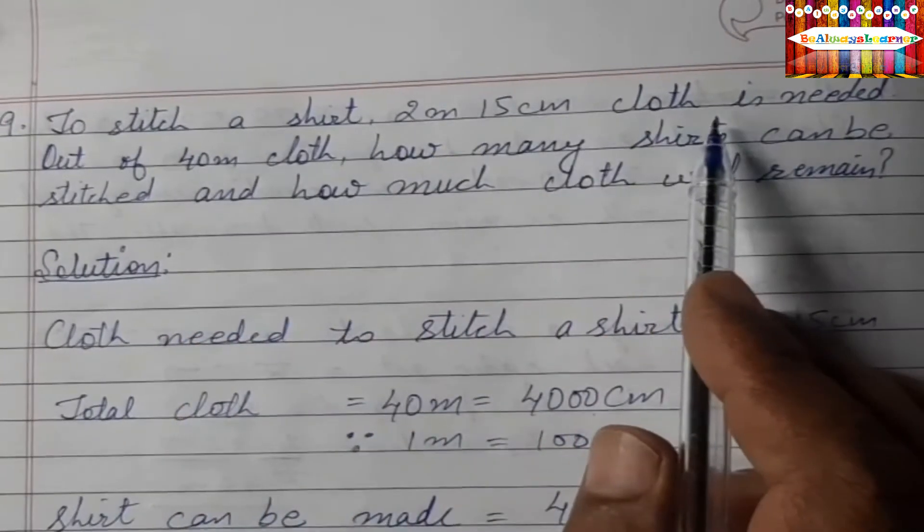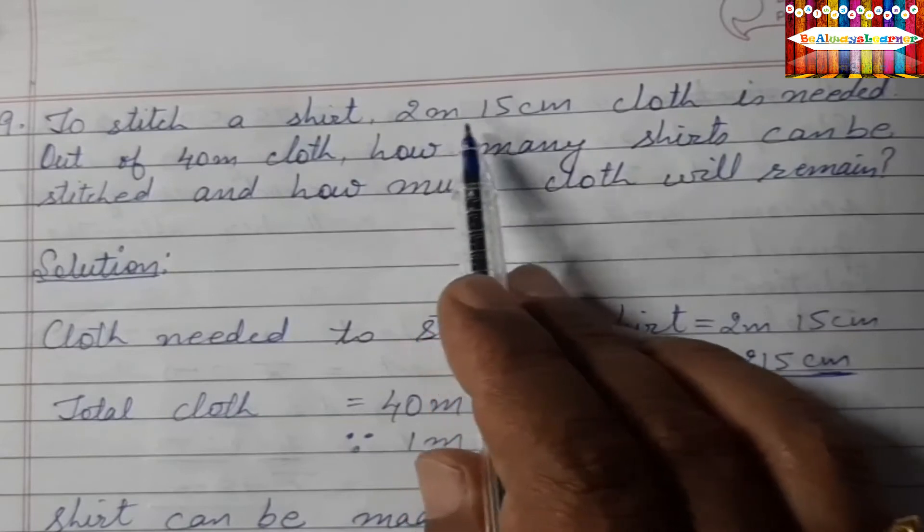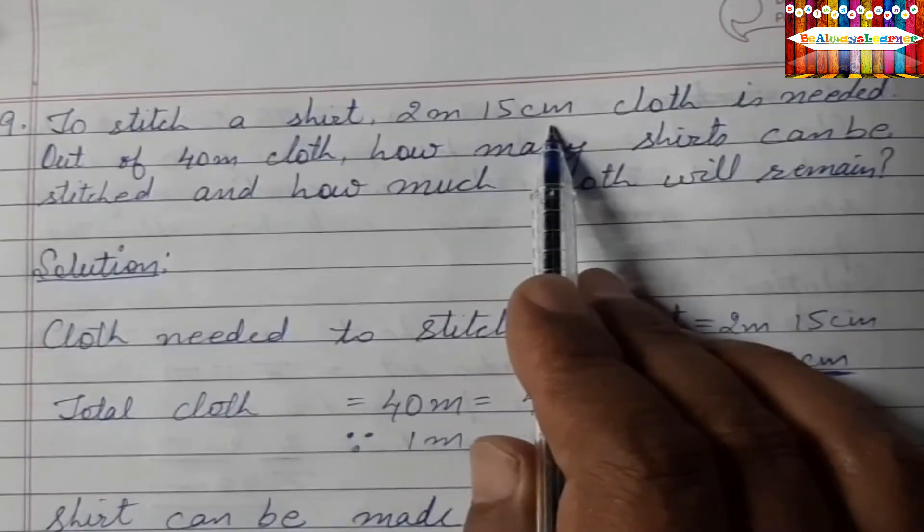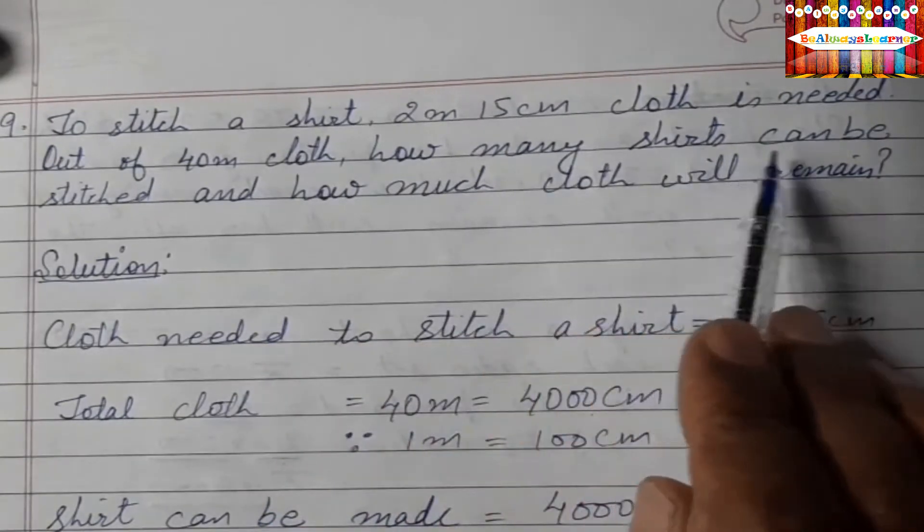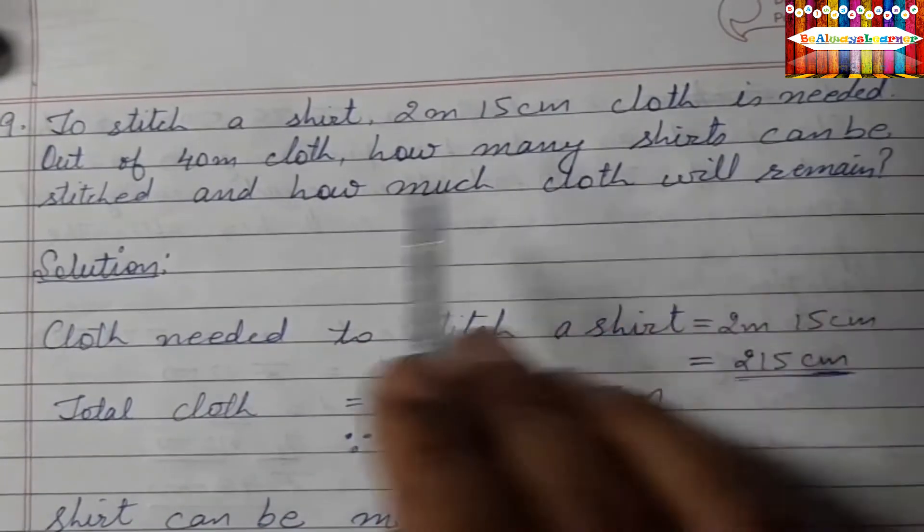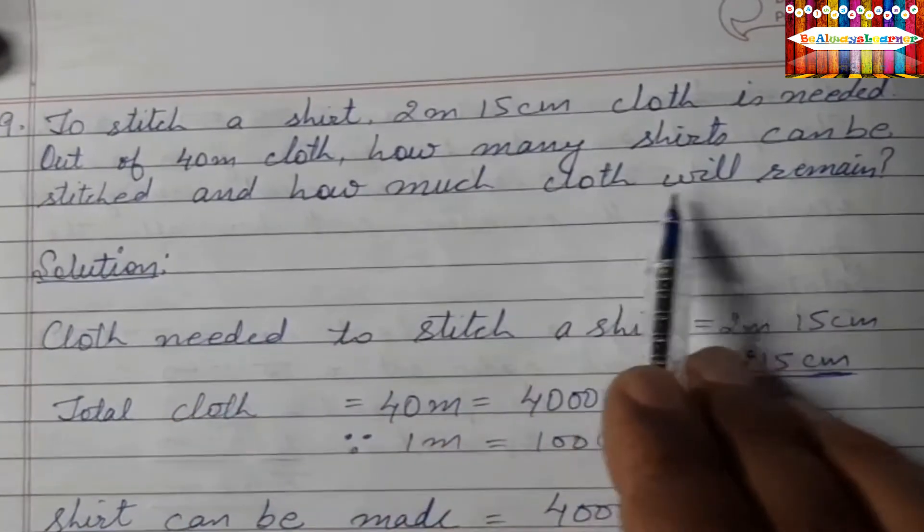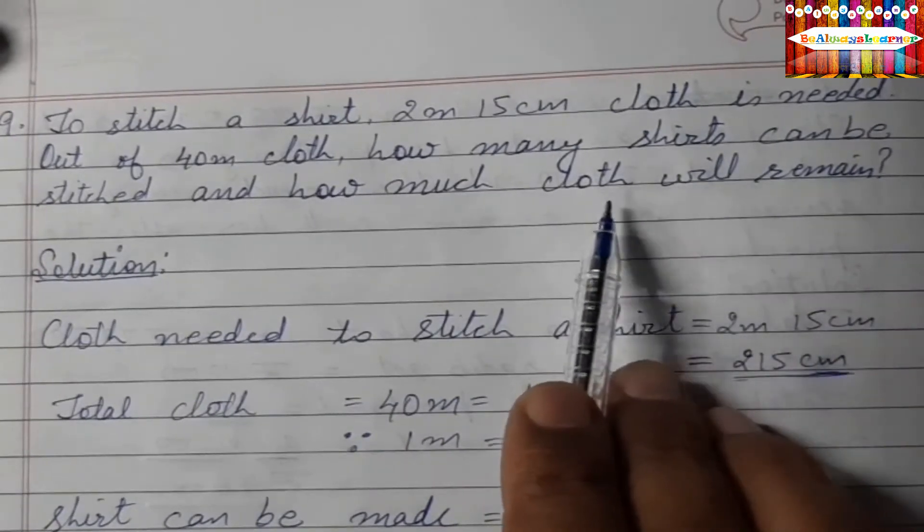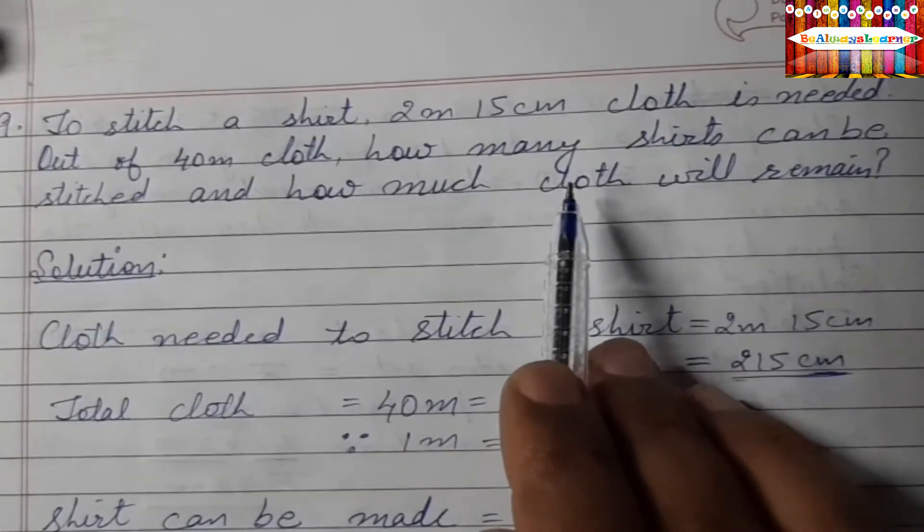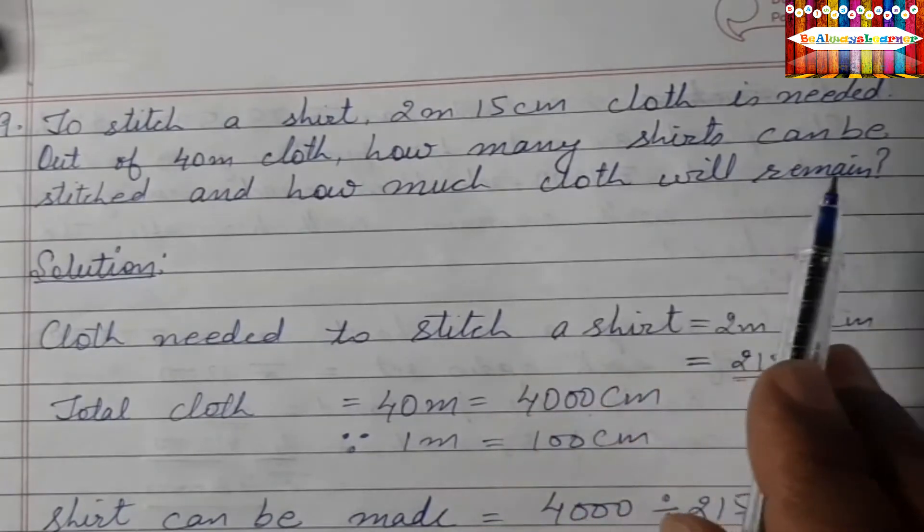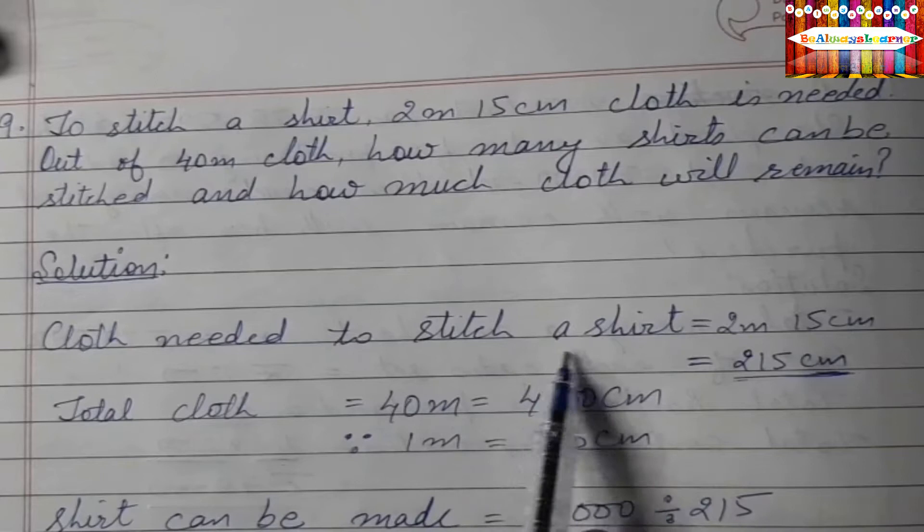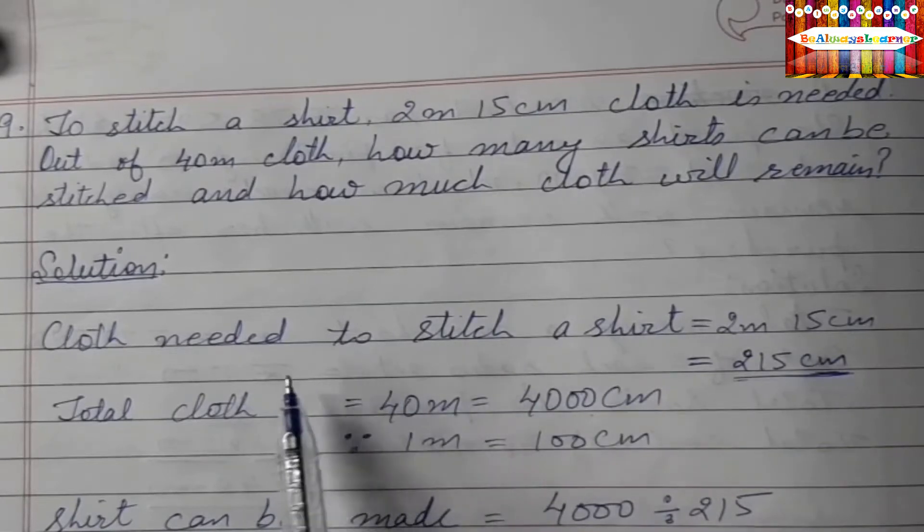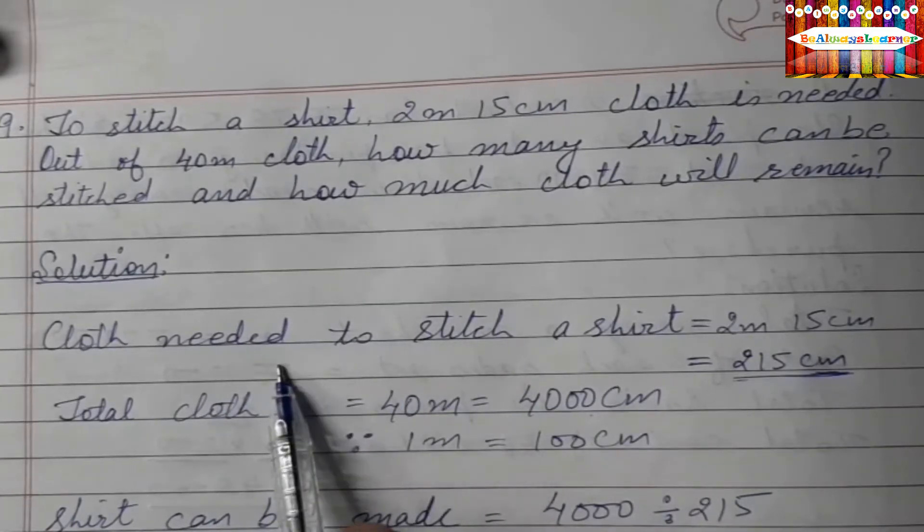That is, 1 shirt requires 2m 15cm of cloth. How many shirts can be stitched and how much cloth will remain? That is, how many shirts will be in 40m and how much cloth will remain? Solution: Cloth needed to stitch a shirt is 2m 15cm.